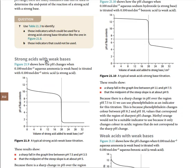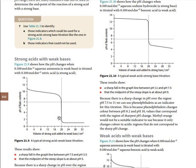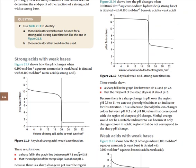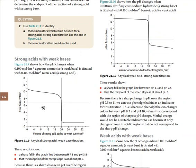For a strong acid–weak base reaction, you can see from the pH vs. volume graph that the pH range is located well below 7. Since the range is on the lower side, the best indicators to use are those with low pH ranges: methyl violet, methyl yellow, methyl orange, and bromophenol blue. Indicators with high pH ranges — bromothymol blue and phenolphthalein — should not be used here.